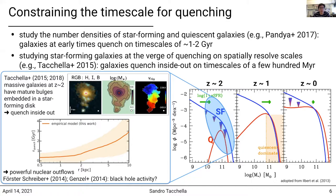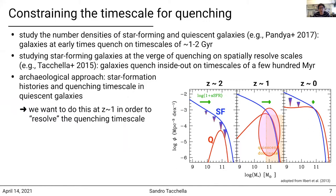In the remainder of my talk, I want to use the archaeological approach to measure star formation histories and quenching timescales in quiescent galaxies around redshift 1. We want to do this around redshift 1, and not today, because we want to be as close as possible to the epoch of quenching in order to ensure that the stellar populations contain the necessary information to constrain the quenching timescale.